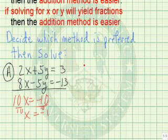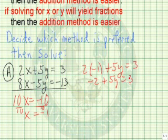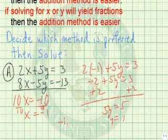So if x equals negative 1, let's take our first equation, replace x with negative 1, and see if we can solve for y. So we have negative 2 plus 5y equals 3. Let's add 2 to both sides of the equation. 5y equals 5, so y equals 1. So our solution is negative 1, 1 for x and our y value. And this is a nice consistent system.